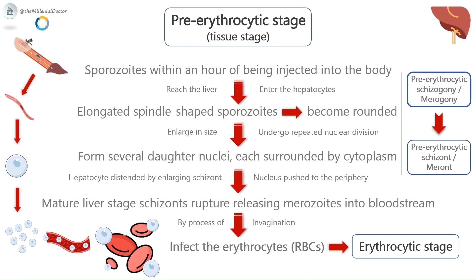Within an hour of being injected into the body by the mosquito, the sporozoites reach the liver and enter the hepatocytes to initiate the stage of pre-erythrocytic schizogony or merogony. The sporozoites, which are elongated spindle-shaped bodies, become rounded inside the liver cells. They enlarge in size and undergo repeated nuclear division to form several daughter nuclei, each surrounded by cytoplasm. The hepatocyte is distended by the enlarging schizont, and the liver cell nucleus is pushed to the periphery. Mature liver-stage schizonts are spherical, 45 to 60 micrometers, multi-nucleate, and contain 2,000 to 50,000 uni-nucleate merozoites. Unlike erythrocytic schizogony, there is no pigment in liver schizonts. These normally rupture in 6 to 15 days and release thousands of merozoites into the bloodstream.